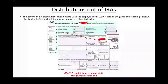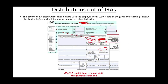This is the 1099-R, where the IRA distribution is reported. It shows you the gross distribution, the taxable amount, whether any money was withheld for taxes, and any distribution code indicating why the distribution was made — because sometimes there's a penalty, or there's an exception. Part of the IRA could be tax-free and part could be taxable. The form might change a little over time, but the idea is the same.